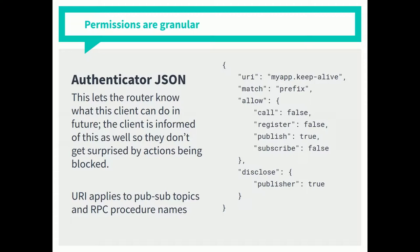Permissions are granular. In our Crossbar configuration, for a given URI (like a topic name), we can say: a user can't do calls, registers, or subscribes, but they can publish. There's also a 'disclose publisher' key. Disclose means: if I send a message to the router and it relays it to someone else, does the other person find out it was me who sent it? Generally you'll want to disclose because conversations are better when people know who they're talking to. But for anonymous chat — say law enforcement taking anonymous tips — you might turn this off.